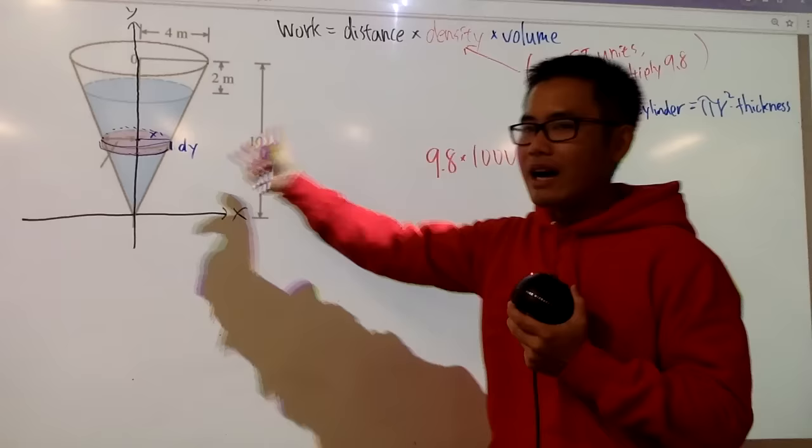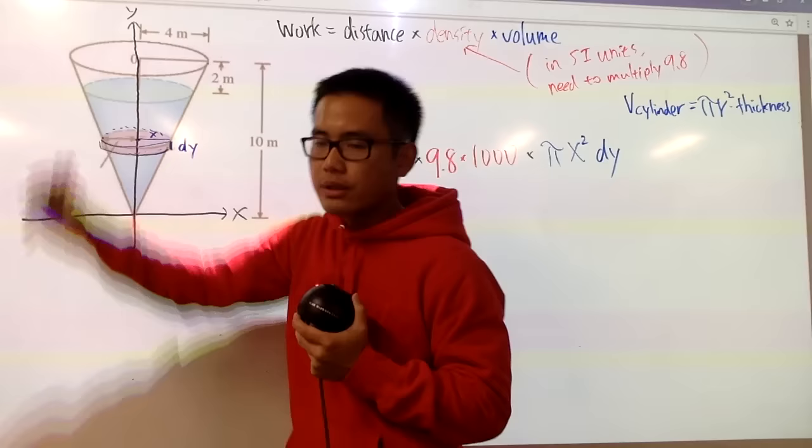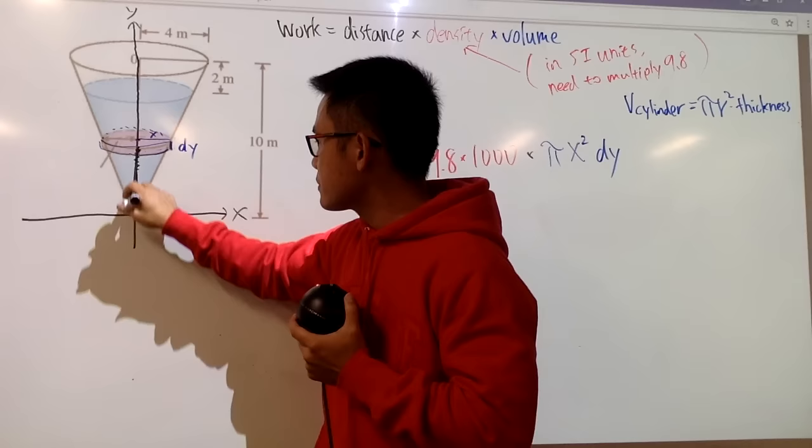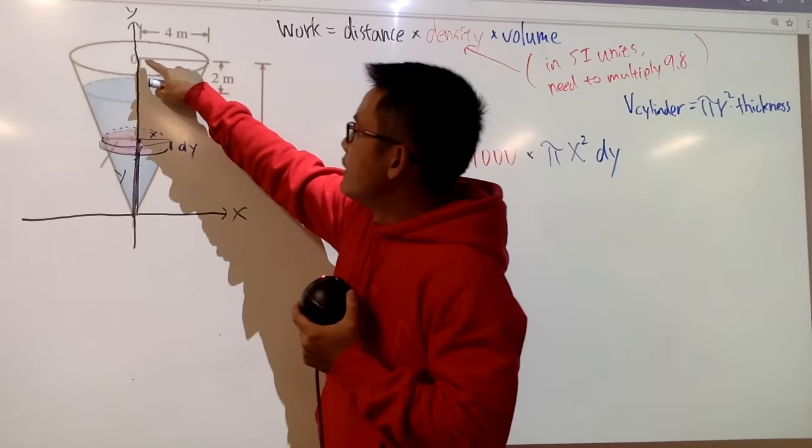Next, we are going to figure out the distance. For the distance, it's the following. We have to figure out the distance from here all the way to the top of the tank so the water can be out. Well, based on this picture that we have, distance right here, from here to here, is the y value because that's the vertical distance. The horizontal distance was the x.